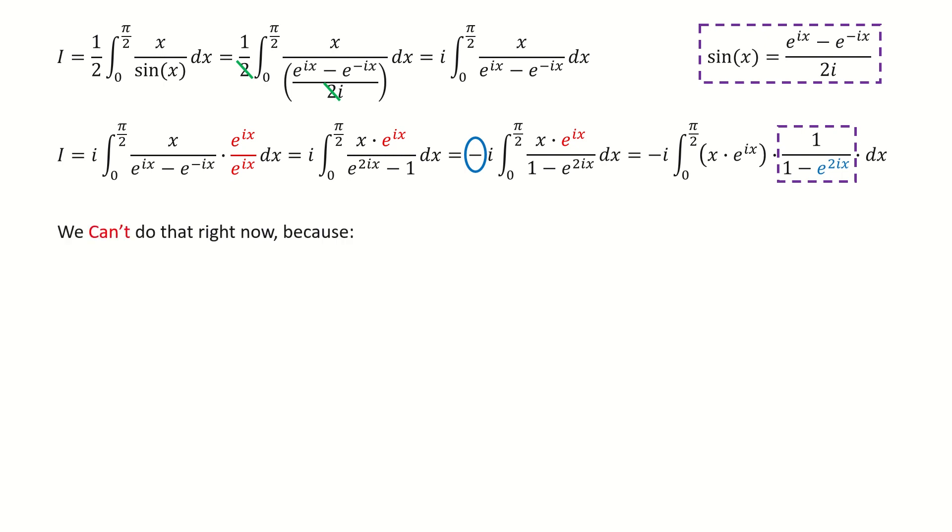But the problem is, we cannot do that right now. Recall the power series for this function. We know this power series is convergent when the absolute value of z is less than 1. But if we look at this blue term, the modulus of this blue term equals 1. So it's outside the radius of convergence. That's why we cannot do the power expansion right now, so we have to apply some tricks.